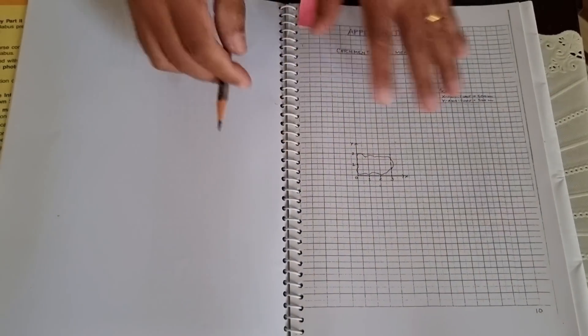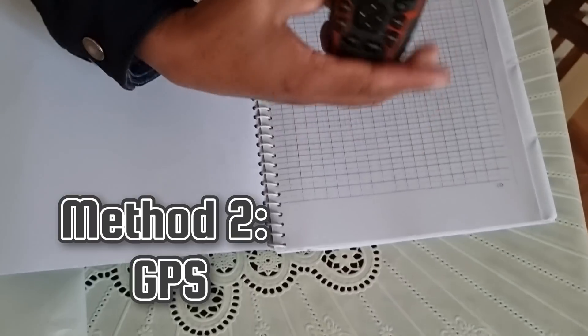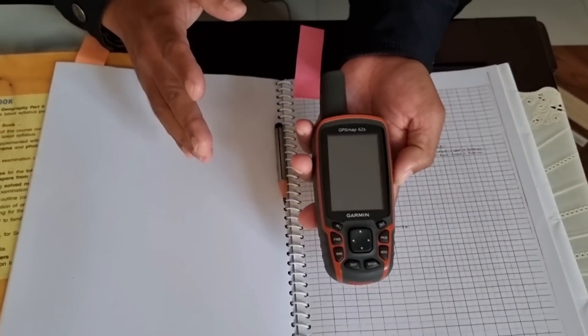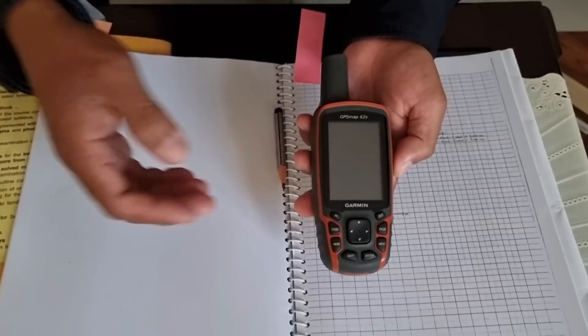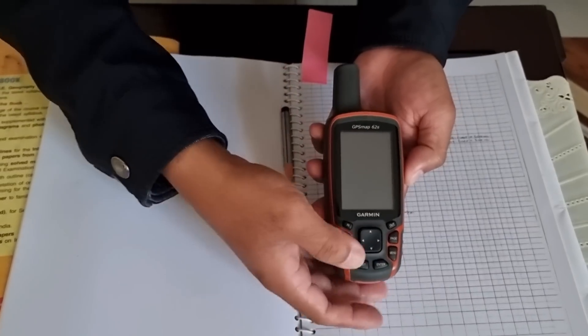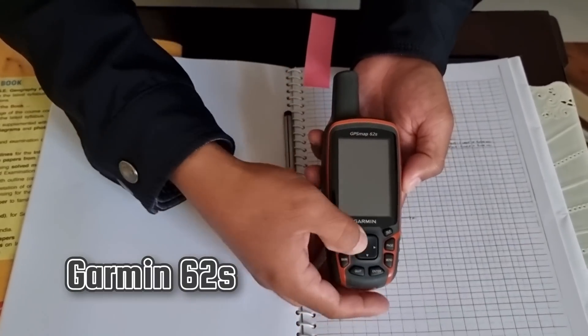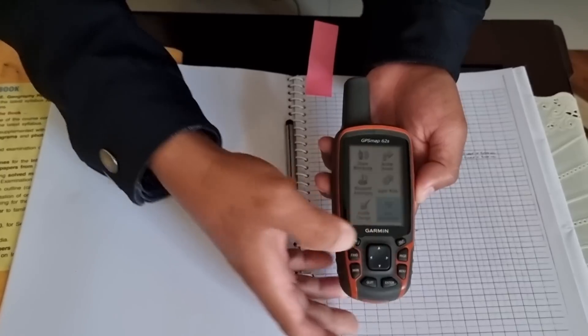So this is the first method. The second method is by using a GPS. Now if you had watched my fourth video on tips and tricks on surveying, you'll know that this is my favorite GPS, the Garmin 62S. Now when you get good satellite reception...